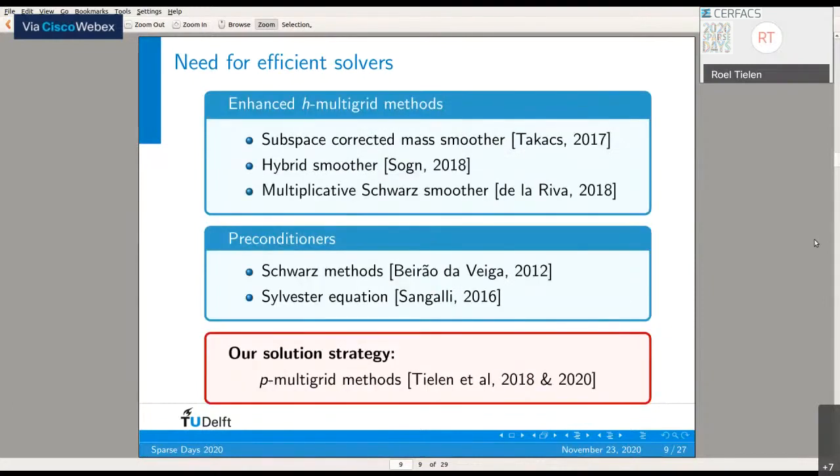To overcome this problem, different solution strategies have been pursued. One can think, for example, about H-multigrid methods with special smoothers. Preconditioners have been developed specifically for the IGA context. The solution strategy we are adopting, about which I will talk now, are so-called P-multigrid methods.